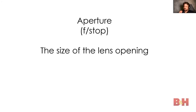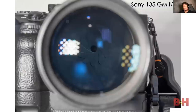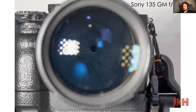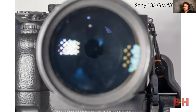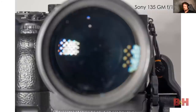Now f-stop or aperture. The aperture is measured in f-stops — that's why the two terms get confusing. Fundamentally it's the size of the lens opening: a ratio of focal length to lens opening. Here is my Sony 135 G Master at f22 — you can see the shutter blades and that little hole in the middle. That's what f22 looks like — a very small hole letting in very little light. At f8 it's quite a bit bigger, and at f1.8 you can't even see the opening; it's basically the entire lens.